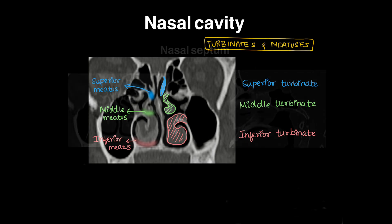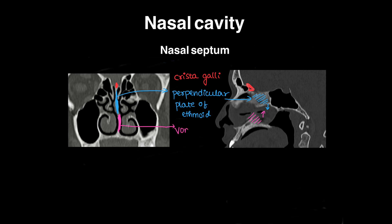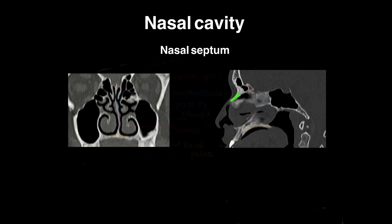Now the anatomy of the nasal septum as a whole: the bony projection superiorly is the crista galli. Below it is the perpendicular plate of ethmoid, which drops down from the ethmoid bone. From below, the vomer bone arises from the hard palate, both belonging to the maxilla bone. On sagittal section, we can see the paired nasal bones on either side.